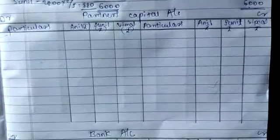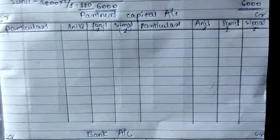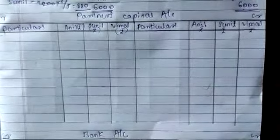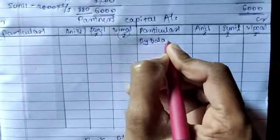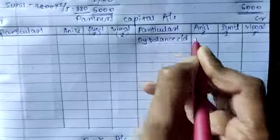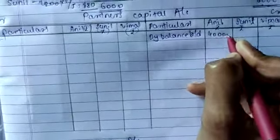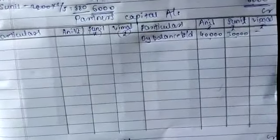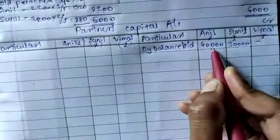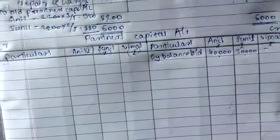Here is the debit part and here is the credit part. While starting the partners capital account, you should first take the capital balances of the old partners. Capital balances show a credit balance, so on the credit side write 'By Balance b/d'. Anil is ₹40,000 and Sunil is ₹30,000.